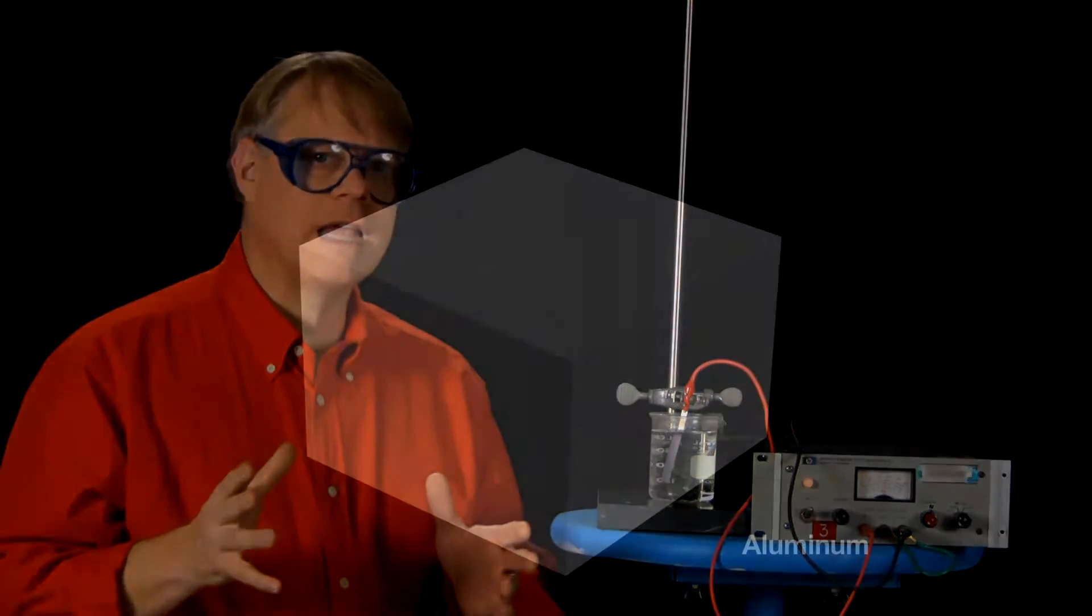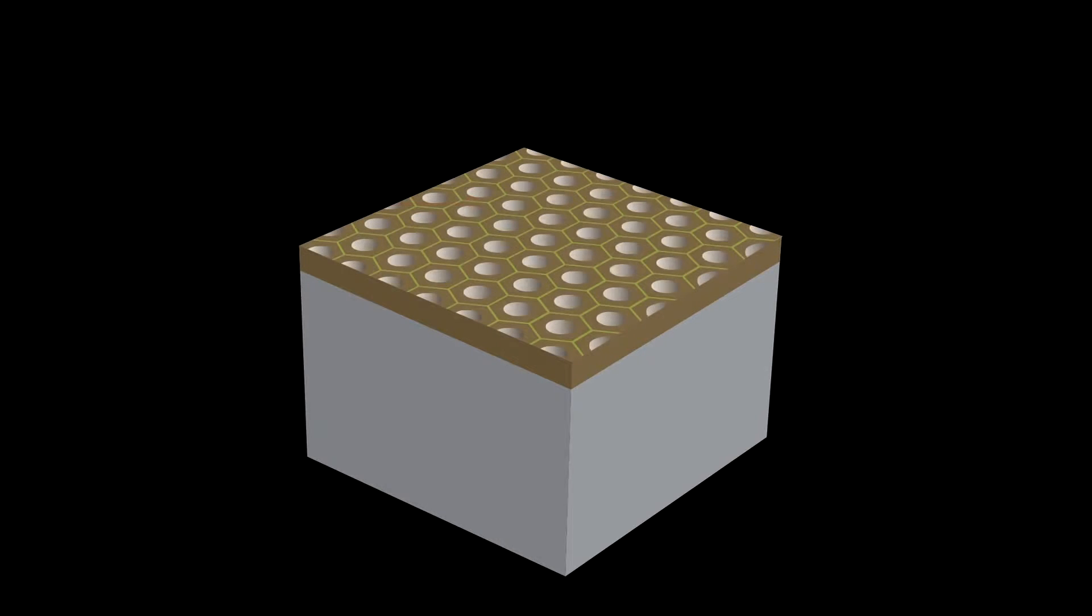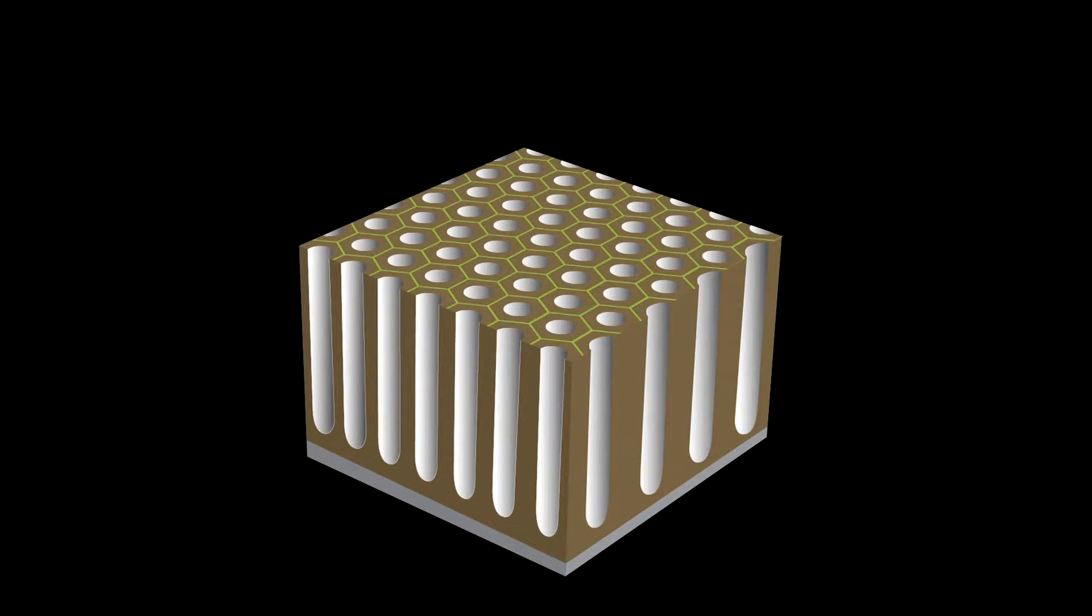Anodizing aluminum starts out much like titanium. Using aluminum as the positive electrode, engineers first pass enough current to grow a thin barrier layer, similar to that which forms naturally. Then, as the anodizing proceeds, the current pushes this barrier deeper down into the aluminum, converting the aluminum above into a very porous oxide layer.